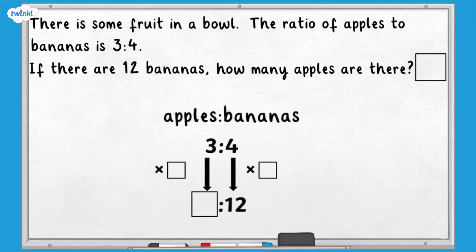This might help you answer the question. If we know what the number of bananas in the ratio has been multiplied by, we can multiply the number of apples in the ratio by the same amount to get our answer. Now try and solve the problem if you haven't already got an answer.